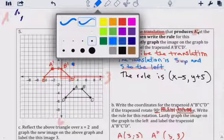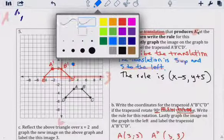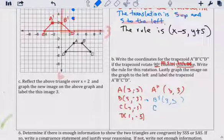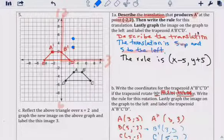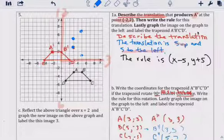And then C-prime. Opposite of 7, 5 is 5, 7. Right there. And then D-prime. It's 1, 5, so it's 5, 1. Right there. Oh, I went up 5, 2. That's why. Right here.